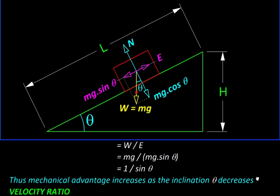Now, let us calculate the velocity ratio. Velocity ratio is the ratio of displacements of the effort divided by displacement of the load.